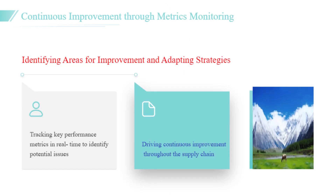Additionally, organizations should monitor order fulfillment rates and lead time variability to ensure they meet customer expectations. Customer feedback and satisfaction scores also serve as valuable indicators of supply chain resilience effectiveness. By continuously monitoring these metrics, businesses can identify areas for improvement and adapt their strategies accordingly. To illustrate, a multinational retailer implemented a dashboard that tracked these key metrics in real-time, enabling them to respond dynamically to customer needs and operational challenges.